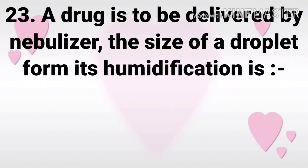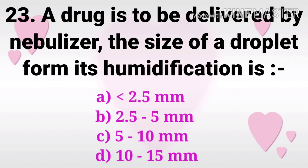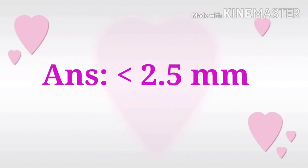Question 23: A drug delivered by nebulizer — the size of a droplet for humidification is? The options are less than 2.5 mm, 2.5 to 5 mm, 5 to 10 mm, and 10 to 15 mm. The answer is less than 2.5 mm.